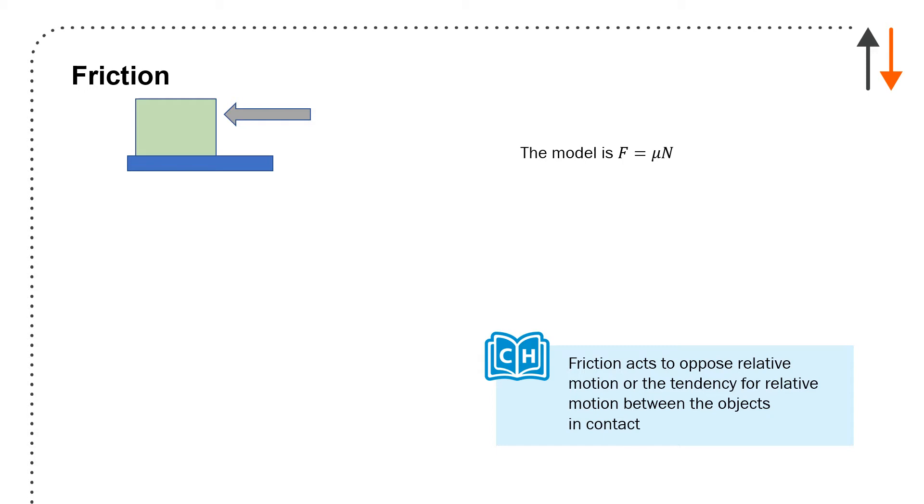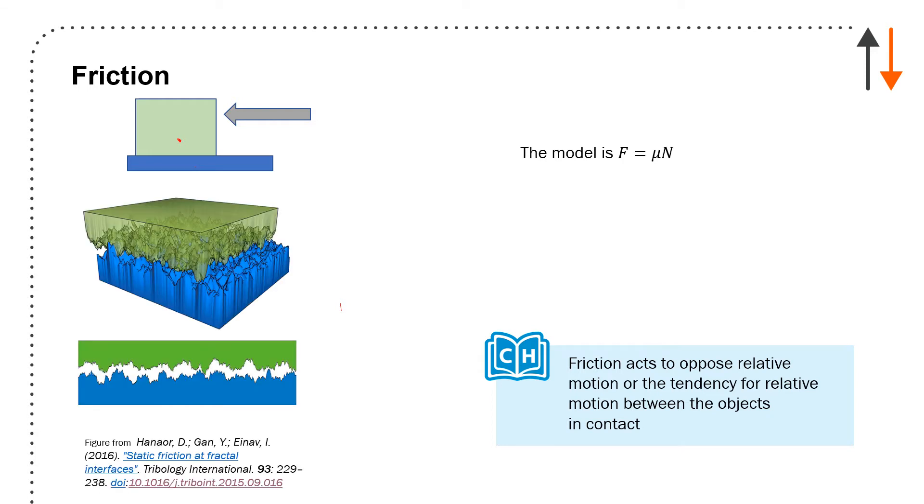You have a box and a floor, you apply a force, and we say there's a friction force. But microscopically, you have a lot of roughness elements. This is from a paper on Static Friction of Fractal Interfaces - when you put one object on another, depending on what the surfaces are like, you'll have different results. We end up with a model: force of friction equals mu times the normal force. You've already done examples of this in various lectures.